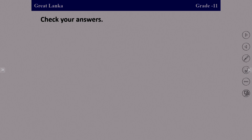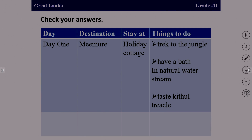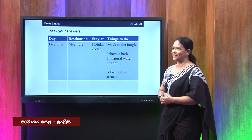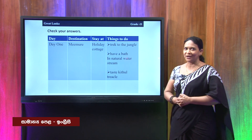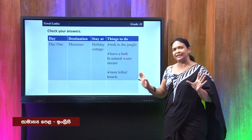Now this is to check your answers. The first part of your itinerary should be completed like this. Under 'day,' you write Day One — according to the plan it is day one. The destination is Mimure. He is going to stay at a holiday cottage. And the things he is planning to do are: trekking to the jungle, having a bath in a natural water stream, and tasting kitul treacle — the palm syrup. So now we have completed the first part of the itinerary.